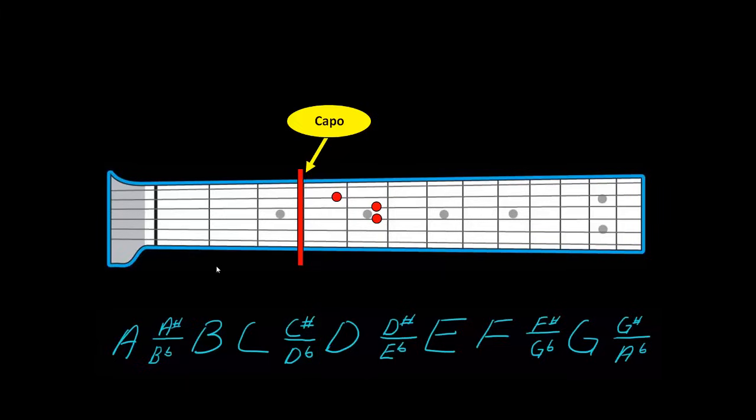Now watch. Before when it was open it was A minor. But I need to move it up one, two, three frets. So I go one, two, three. So this chord is now a C minor chord.